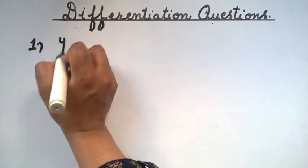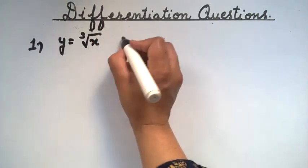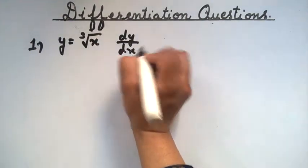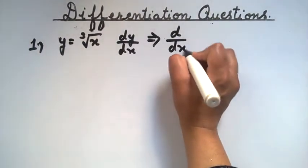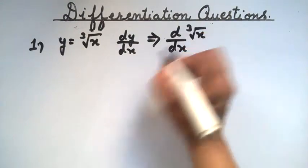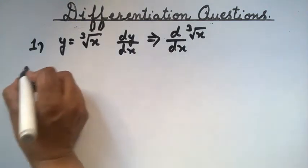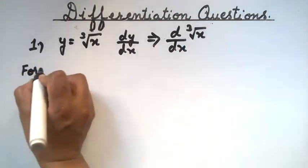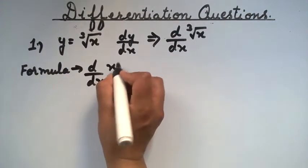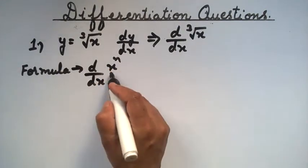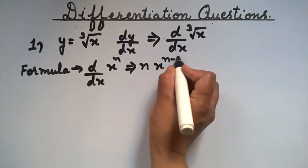Our first question is: y is equal to the cube root of x. Find dy/dx. The formula we use is: differentiation of a variable raised to the power n equals n times x raised to the power n minus 1.